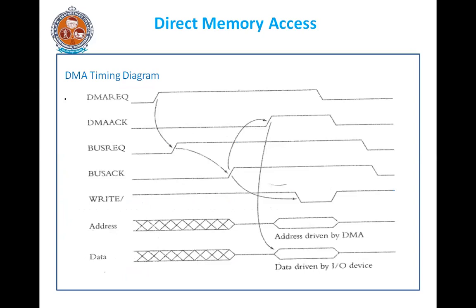This is the timing diagram for the DMA. The DMA request is accepted first. The cross-hatching in the address and data buses indicates those buses may be driven by other components. The arrows indicate which edges cause which subsequent edges.